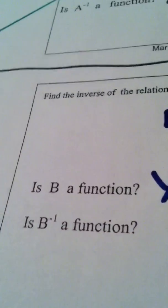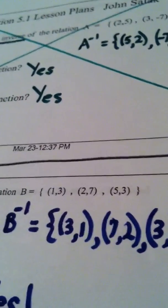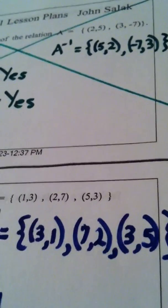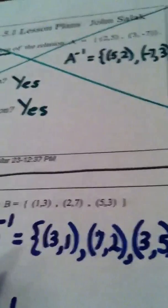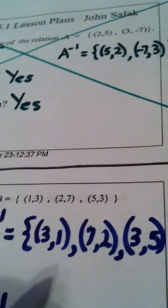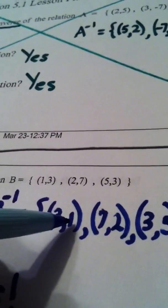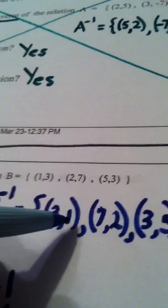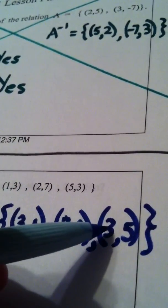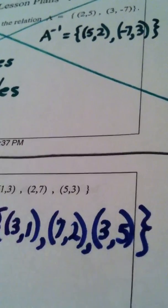Is B inverse a function? Well, let's see. We got a problem here. Remember, to determine if something is a function, you scrutinize the x value. 3 promised itself to 1 forever. Uh-oh, but later on, 3 is on a date with 5.